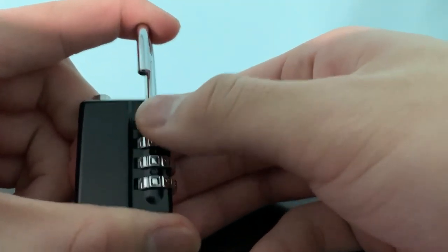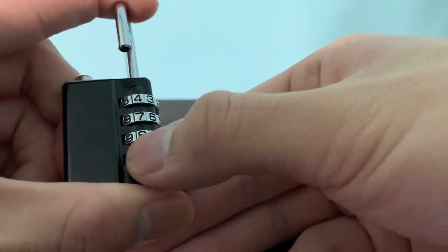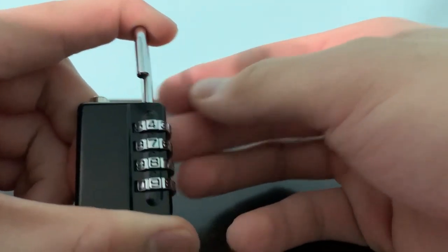And then now from there, you just set the combination to whatever combination you want, which is 4789, and then release it, and then lock it back into place.